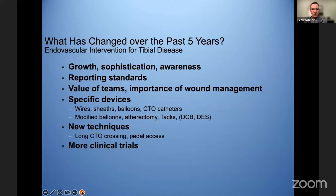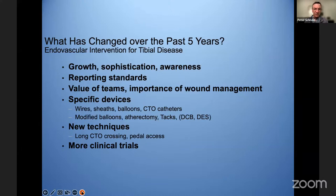We also have some new and specific devices — wires, sheaths, balloons, CTO catheters — some of which were adapted from the coronaries. But more and more now, we're having devices specifically designed for the type of disease and the distances and the types of procedures we're doing, with long lesions especially in the below-the-knee space. We've also got some modified balloons, atherectomy tacks, and at some point we'll have drug-coated balloons and drug-eluting stents.